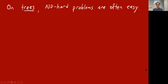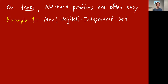It's an interesting phenomenon that on certain kinds of graphs, NP-hard problems can become easy, and this is no more notable than on trees. Almost every problem you can think of on a tree is actually doable in polynomial time. So let's take a little example here of how that works.